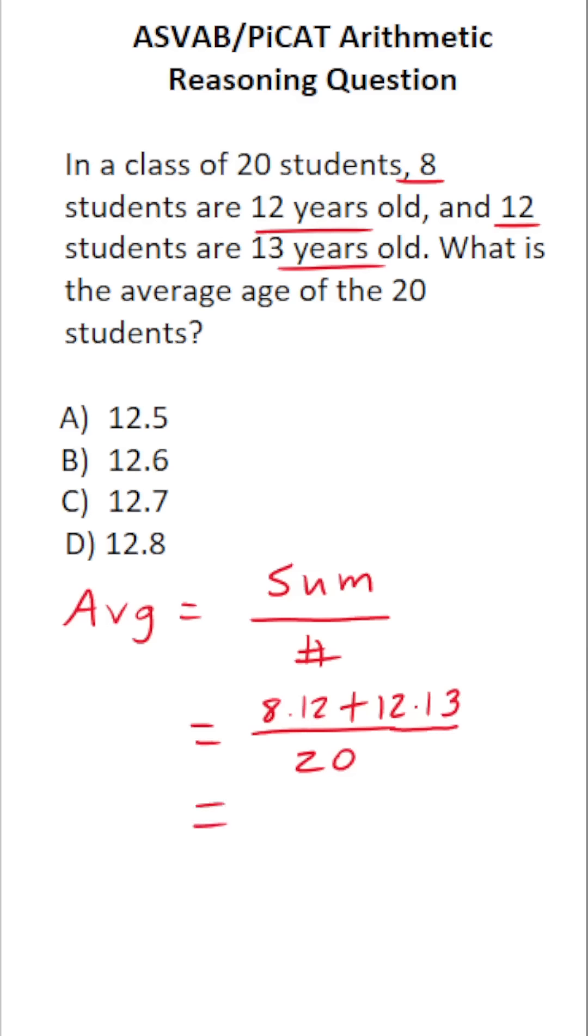And by doing this simple arithmetic here, we'll have our answer. So 8 times 12, if you can't do that mentally, do it off to the side. 8 times 2 is 16, carry a 1. 8 times 1 is 8, plus 1 is 9. So this is 96.